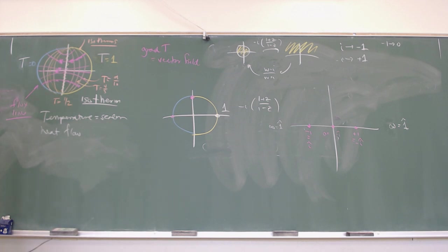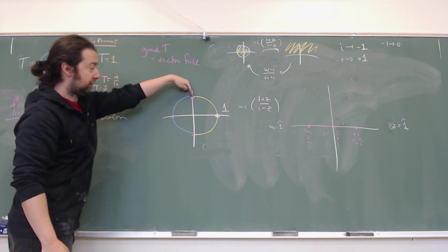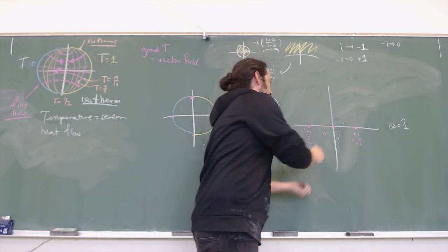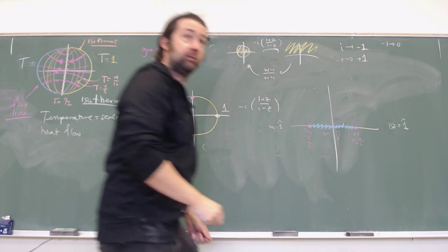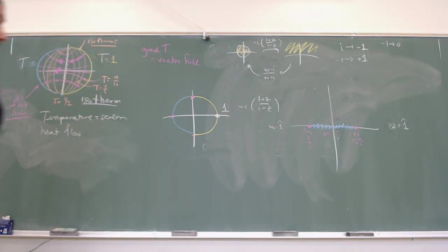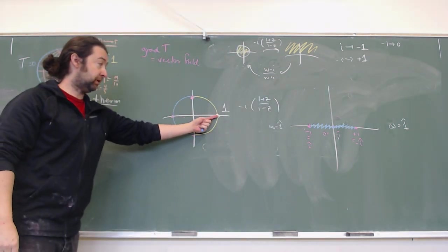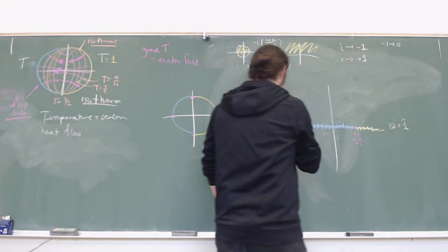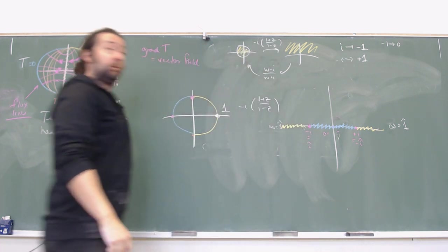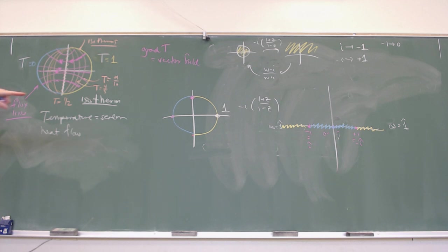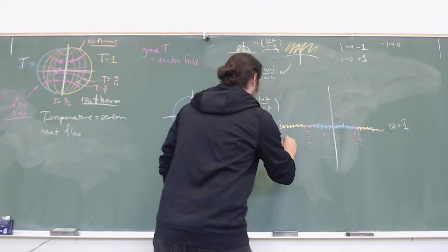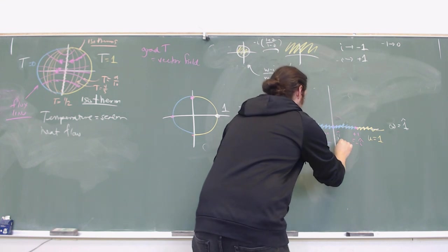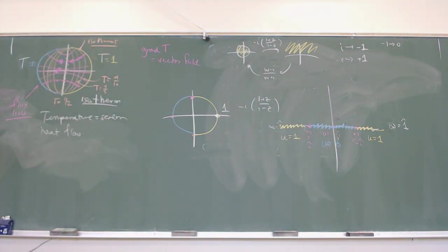The blue portion of the boundary — containing points i, 0, and minus i — maps to the segment between minus one and plus one. The yellow segment, running i to 1 to minus i through infinity, maps to the two outer rays. Our disk picture becomes a half-plane picture where we prescribe u equals one on the outer pieces and u equals zero in the middle.